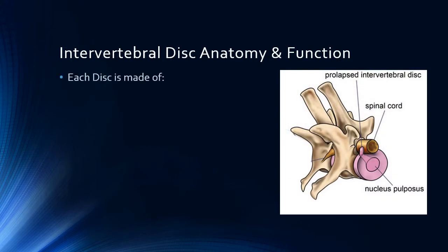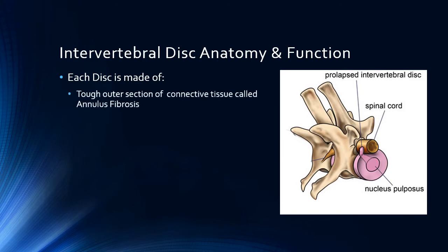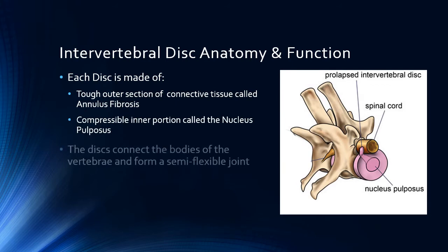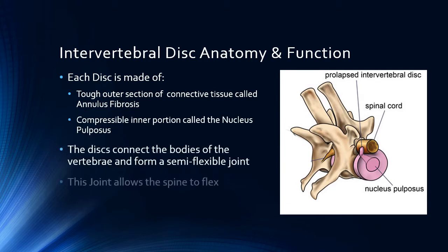The intervertebral disc gets its name because inter means between and vertebral refers to the vertebra — thus, it is the disc between the vertebra. It is composed of a tough outer surface called the annulus fibrosus, which surrounds the compressible center called the nucleus pulposus. When a disc is damaged, material from the nucleus pulposus and some of the annulus fibrosus may be spewed into the spinal canal and damage the spinal cord. It can also shoot into the intervertebral foramen and put pressure on the spinal nerve, causing pain and/or dysfunction.